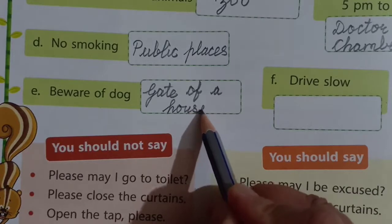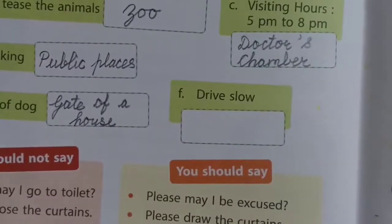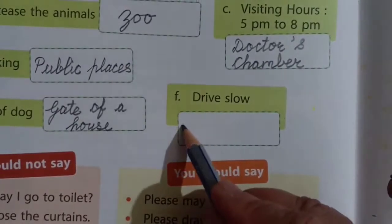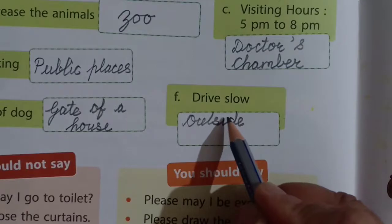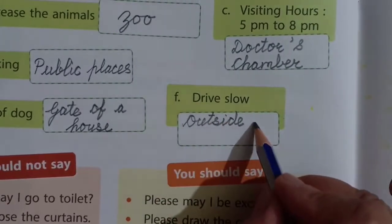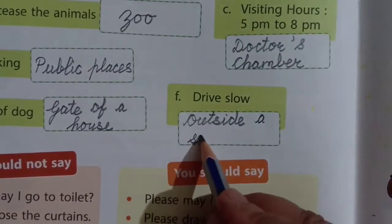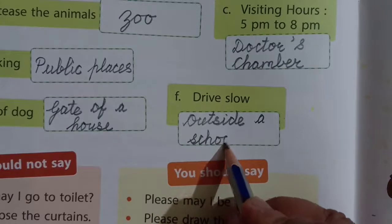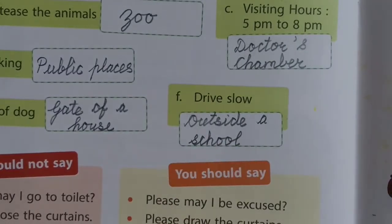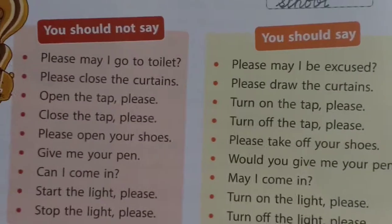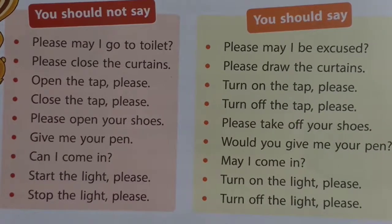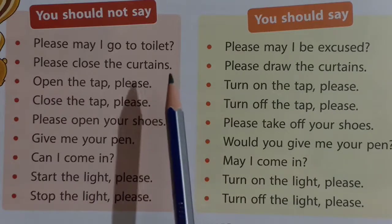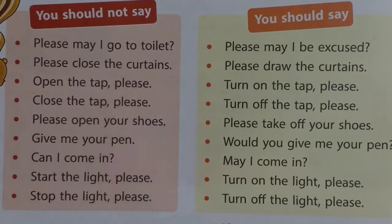'Drive slow' — where is it written? Outside a school. Because people should drive slowly when they are crossing a school, for the safety of children. Now we are going to learn which is the right way to ask. Remember the three magic words: Sorry, Thank you, and Please.